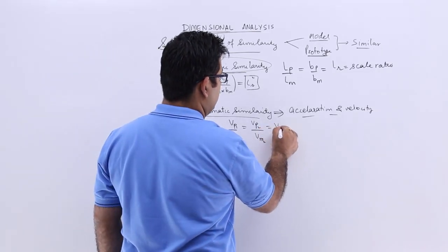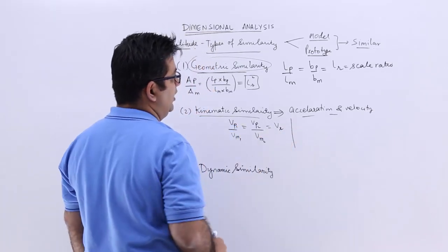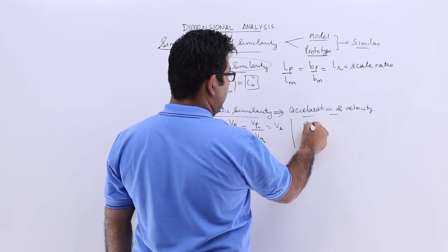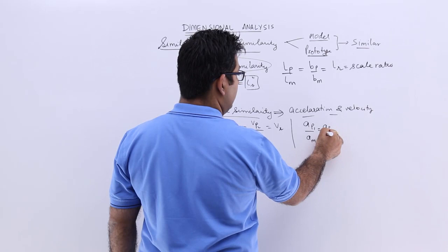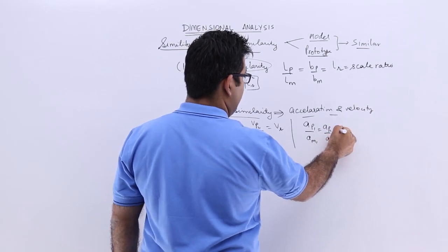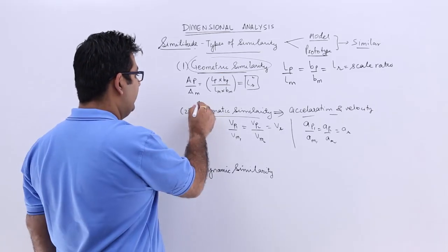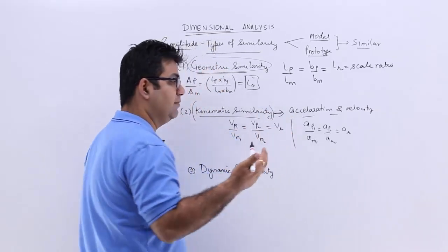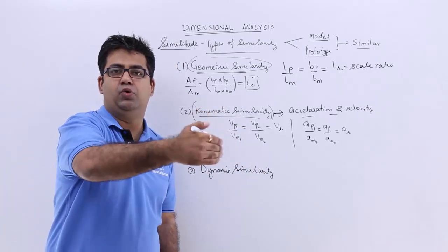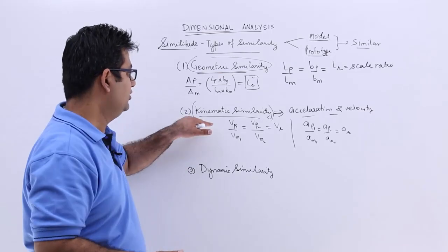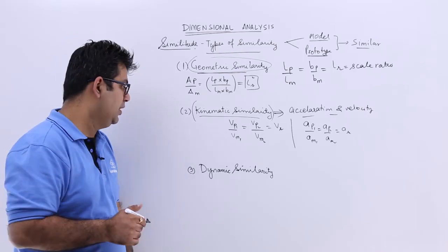And this can be put as VR, which is called the velocity ratio. The same can be said about acceleration, which is AP1 upon AM1, this is equal to AP2 upon AM2, which is AR. So AR is the acceleration ratio. This is how we can define the kinematic similarity between a proto and a model, that is, at every point in a proto and a model, you need to have the same velocity and acceleration in magnitude and in direction as well.